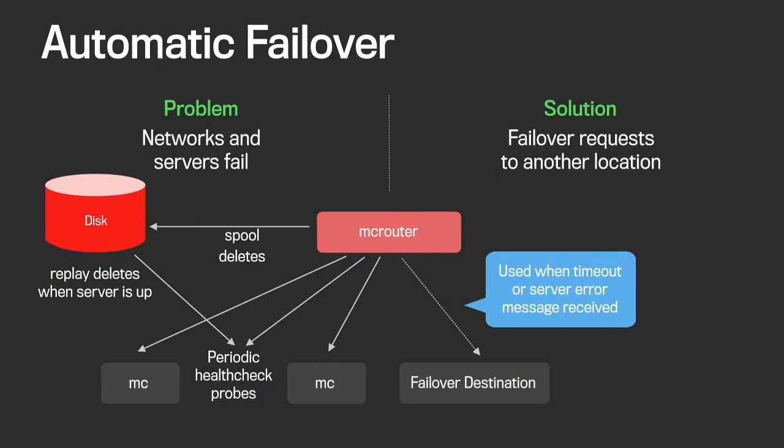At Facebook, we leverage deletes to keep the site consistent. What MacRouter will actually do in this case is log the deletes to disk, so that when the server comes back up we can replay those deletes to keep everything consistent. In the event of a network outage, it's as simple as waiting for the network to be back up for everything to recover. This is a very important feature for our setup.